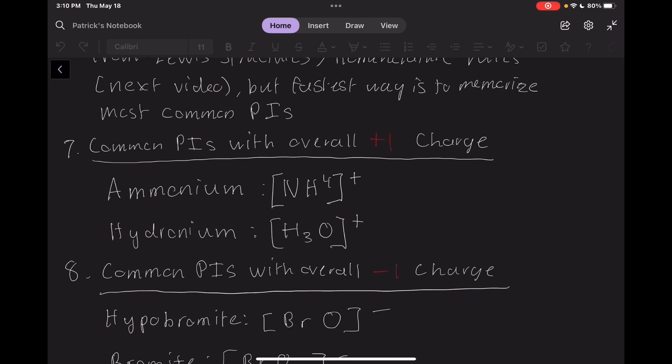So without any further ado, here is our first set of polyatomic ions. The two listed here have an overall charge of positive 1. I'm not going to talk too much here, so feel free to pause the video and write these down, make a table or diagram of your own, whatever you feel like.